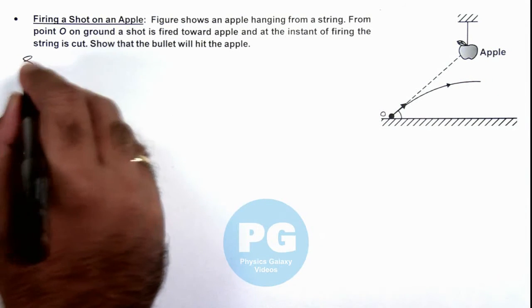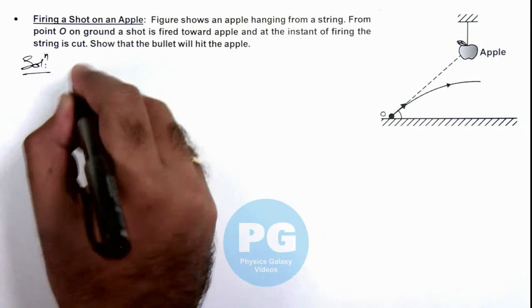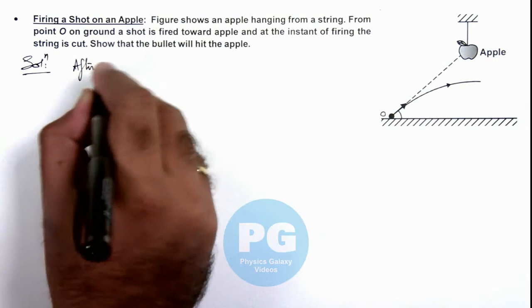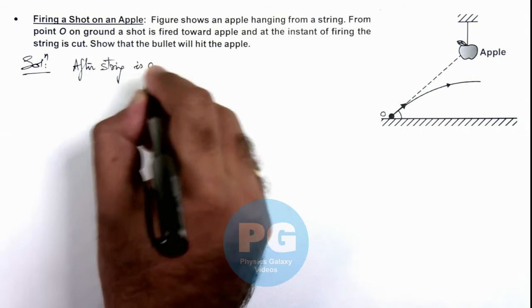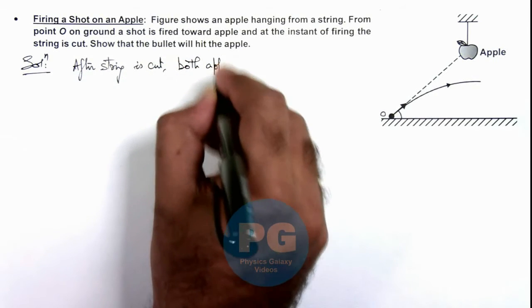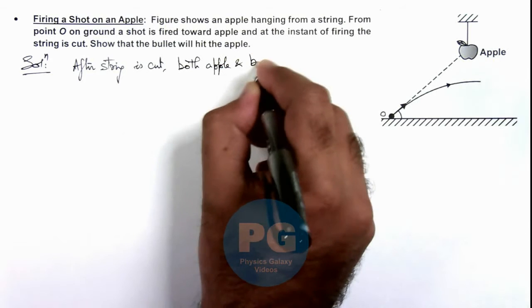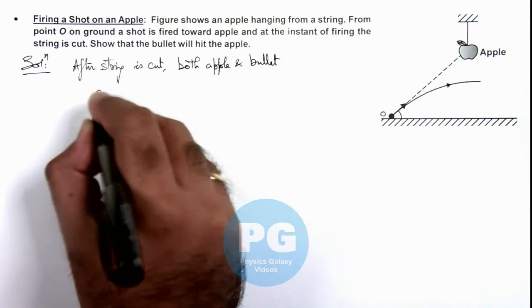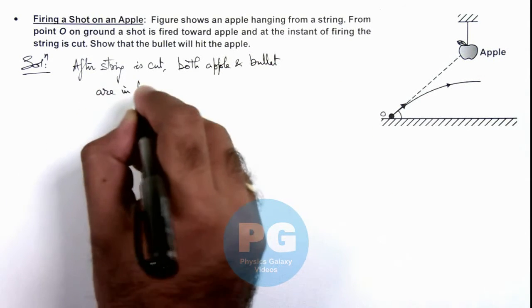Now in this situation, we can see after the string is cut, both apple and bullet are in free fall.